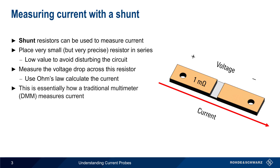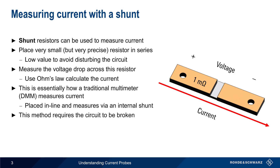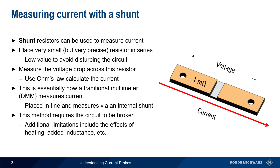Incidentally, this is essentially how a traditional multimeter measures current — it's placed in line with a circuit, and voltage is measured across the meter's internal shunt. The greatest disadvantage of using a shunt resistor is that it requires the circuit to be broken. Some additional disadvantages include the fact that heating may affect the measurement results, and that significant inductance may be added at higher frequencies.